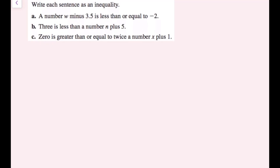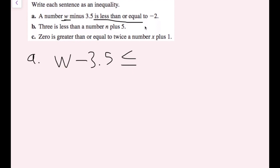Write each sentence as an inequality. Starting with A: 'A number W minus 3.5 is less than or equal to negative 2.' So W minus 3.5 — 'is less than or equal to' gives us the less than or equal to symbol, which is pointing to the left with a line underneath — and then negative 2. This is our inequality based off of the sentence we had.